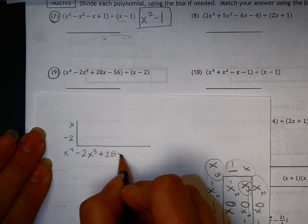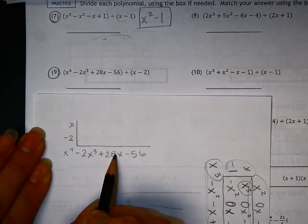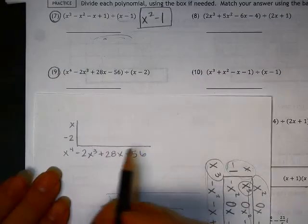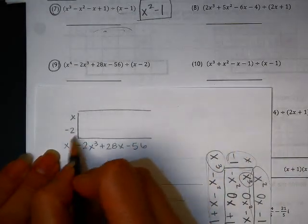Now, you have a choice right here. You can put in a placeholder in between these guys as a 0x squared. Some people like to do that. I'm going to show you what it looks like if you don't put in a placeholder. Either way, it works out just fine.